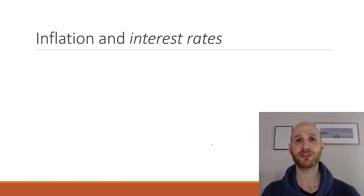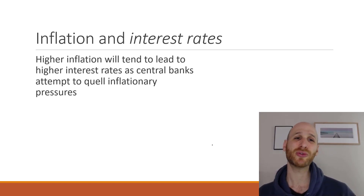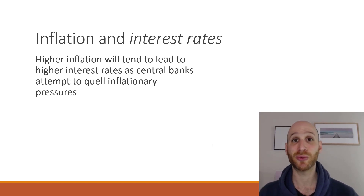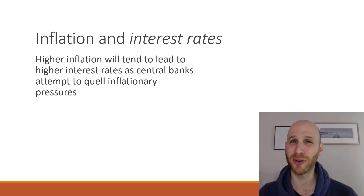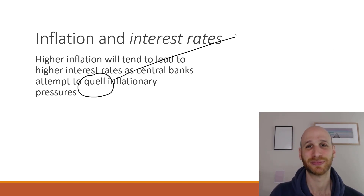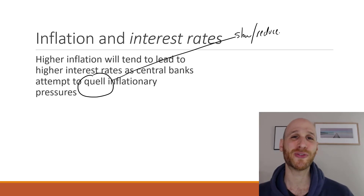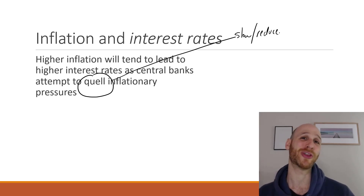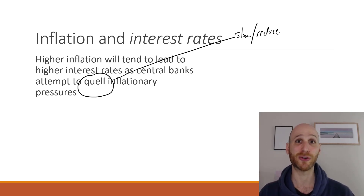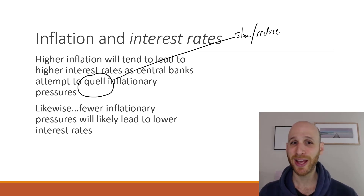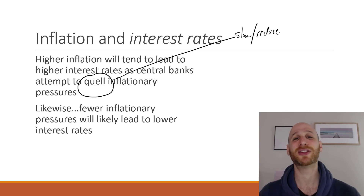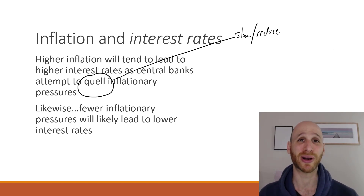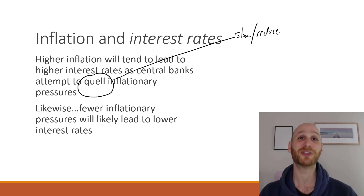Let's think about inflation and interest rates. Quite simply, higher inflation will lead to higher interest rates because organizations like the RBA are going to try and slow down — or quell — inflation. 'Quell' is just a fancy way of saying slow or reduce, used here in the context of inflationary pressures. Likewise, low inflation is likely to lead to lower interest rates. So higher interest rates are used to reduce inflationary pressure.